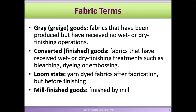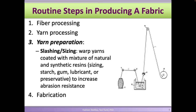When fabrics are first produced, they are called gray goods or greige goods — they haven't gone through a finishing process yet and have a raw color. Once they go through finishing, we call them finished goods or converted goods. When a fabric is colored via yarn dyeing (yarns are dyed before weaving or knitting), the fabric comes out in its final color — we call that loom state color. Mill-finished goods are fabrics finished by a finishing mill.